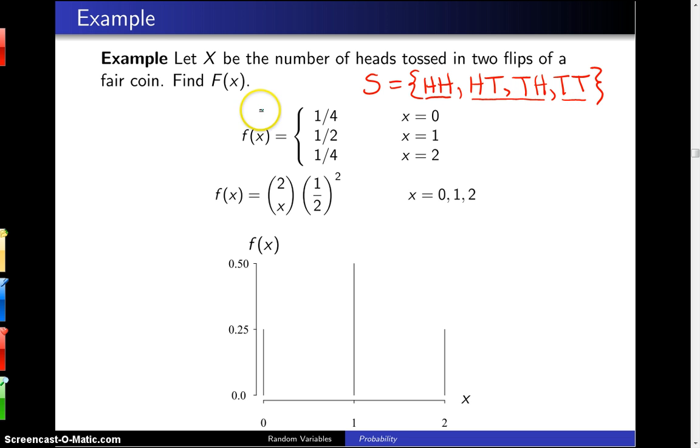Now this can be written explicitly in this fashion. Although that's fine if there's just two flips. If you have 30 flips, that would get a little tedious. So it can also be written in one piece as f of X equals 2 choose X times 1 half squared for X equals 0, 1, 2.